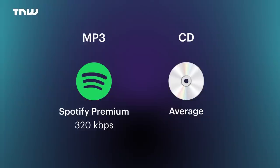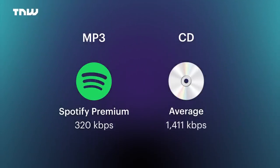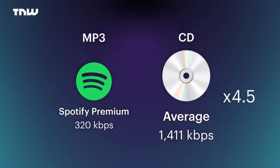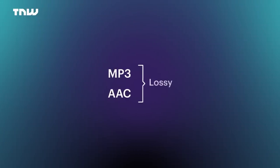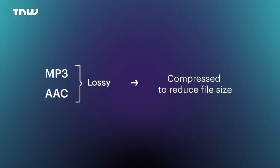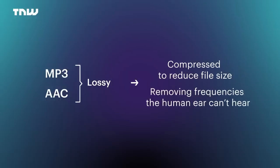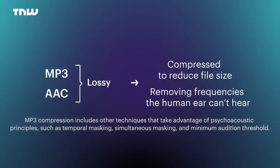In comparison, an average CD has a bitrate of 1,411 kilobits per second — about four and a half times the data of the highest quality MP3. The reason is simple: files like the MP3 and AAC are lossy. They're compressed to reduce file size by shearing off parts of the file that human ears aren't able to comprehend — really any frequency above 20 kilohertz.